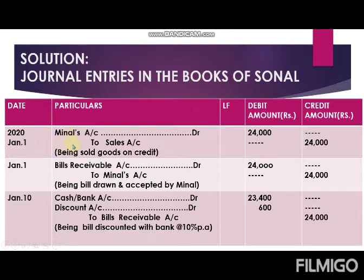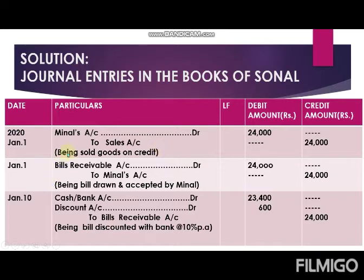The journal entry in the books of the drawer for credit sales is: Drawee's account debit to Sales account. The drawee here is Minal, so the entry is: Minal's account debit to Sales account, amount 24,000. Narration: being goods sold on credit. You remember how to pass and write journal entries — that is the first journal entry.